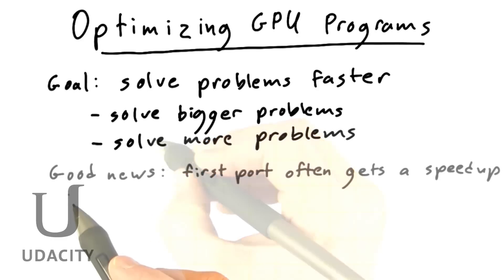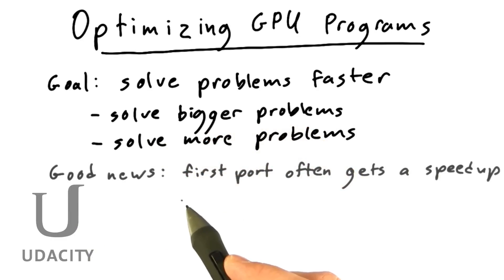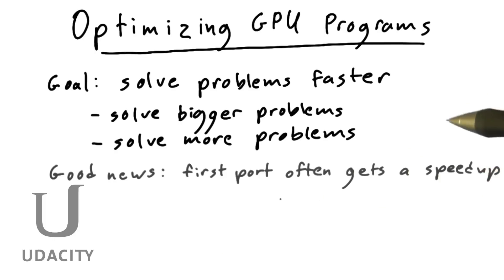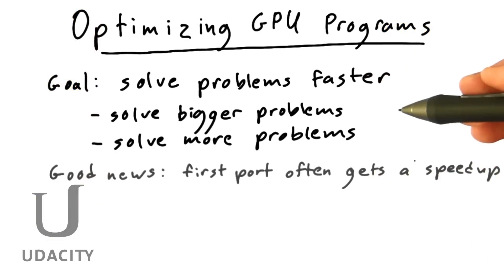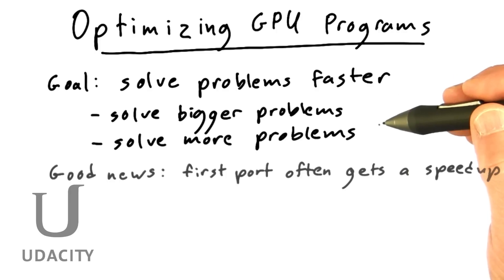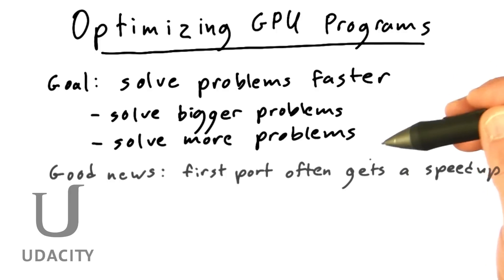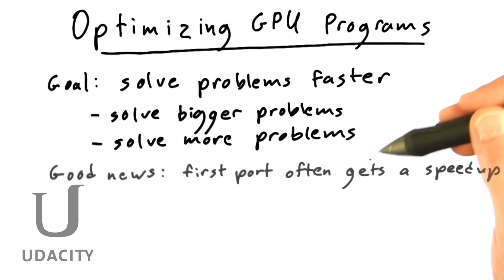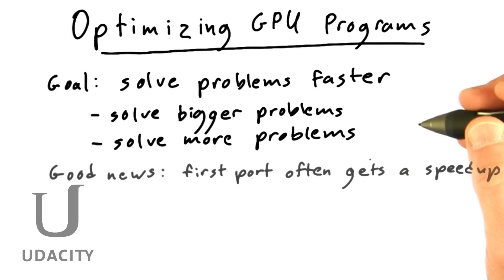The good news is that it's often the case that the first initial port of a problem gets a speed up, assuming that you've got a parallel problem to begin with. And in my experience, this is actually when a lot of GPU programmers get hooked. Over the weekend they go home and out of curiosity they try porting some piece of their existing CPU code to the GPU, and they get a nice speed up — a 5x or 8x speed up. And that's what gets them hooked and makes them realize that they could put some more effort into this and get a bigger speed up.